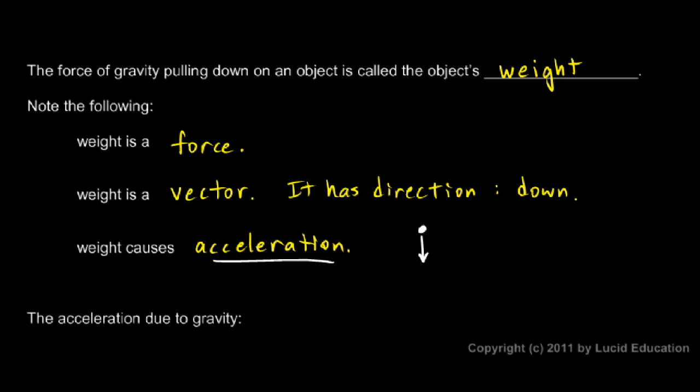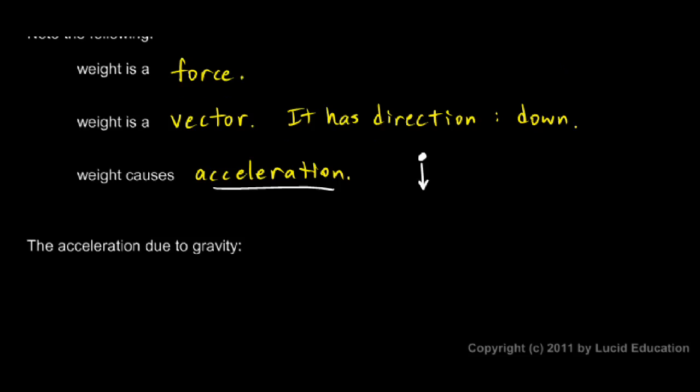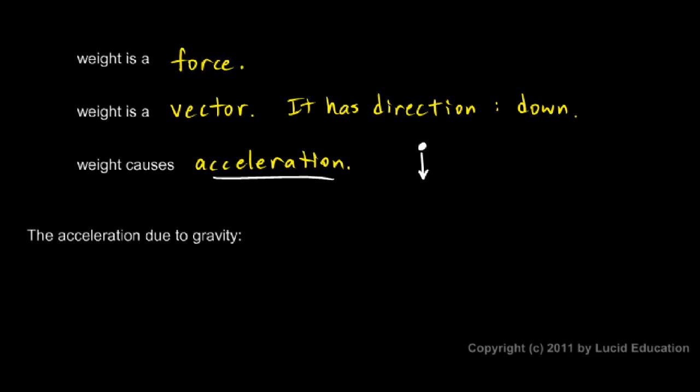Now we know something about the acceleration due to gravity. There's a specific number. We call it little g for gravity, just to give it a name, and it's 9.8 meters per second squared. That's the acceleration due to gravity. And remember what this means, meters per second squared. When you see that, think meters per second per second.